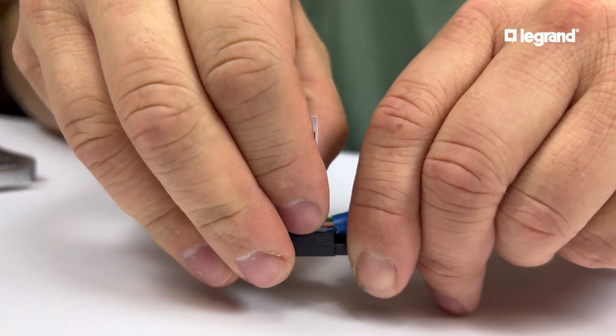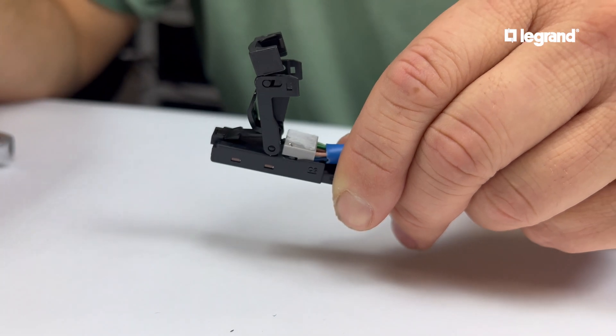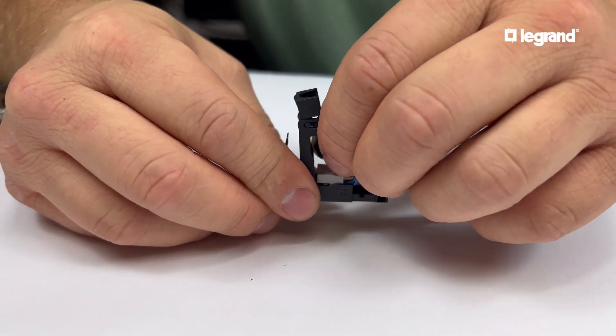Once the wiring cap is properly seated, you can tear away the wiring label from the assembly. Now you can close the plug cover. You should hear a snap when you squeeze it shut.